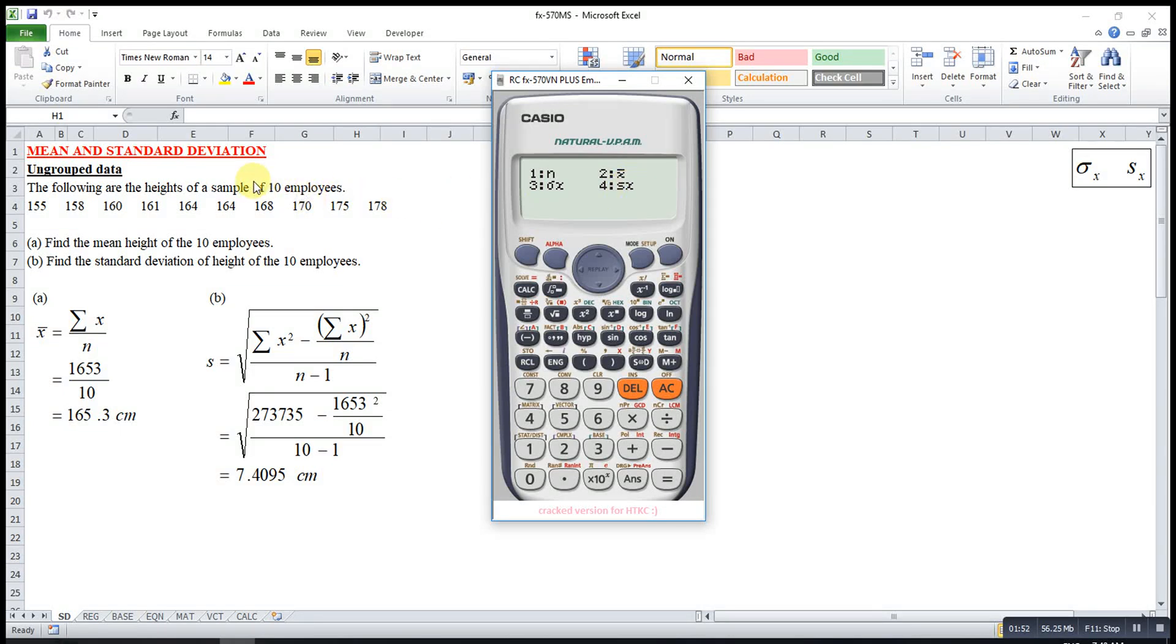Since this question mentions sample, so we choose 4. 4 equal. So this one will be the standard deviation. And then for mean, 4, 2, then equal. So this one will be the mean.